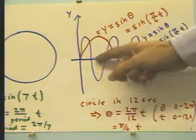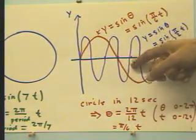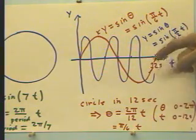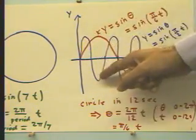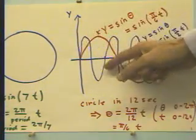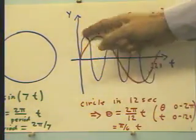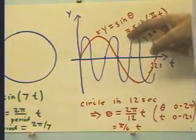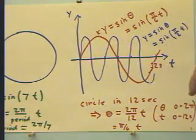Now, if the bug travels one time around the circle corresponding to this type of graph for the sine function, and if he travels this far in 4 seconds rather than 12, then he's going to go through 1, 2, 3 complete cycles in this 12 seconds.